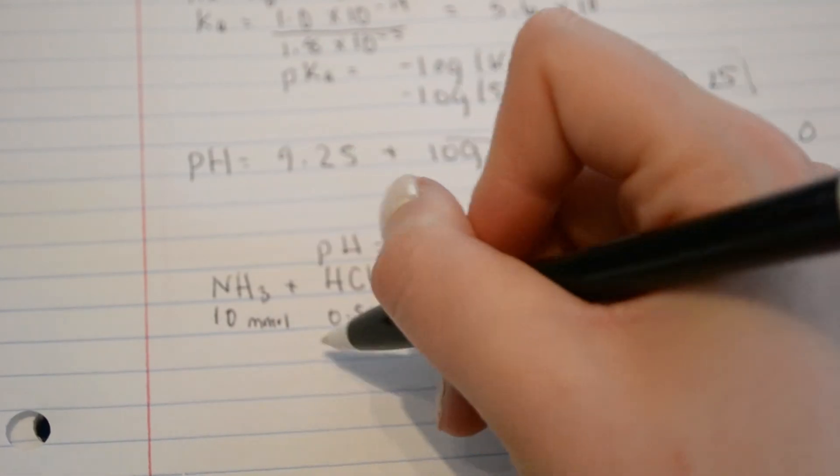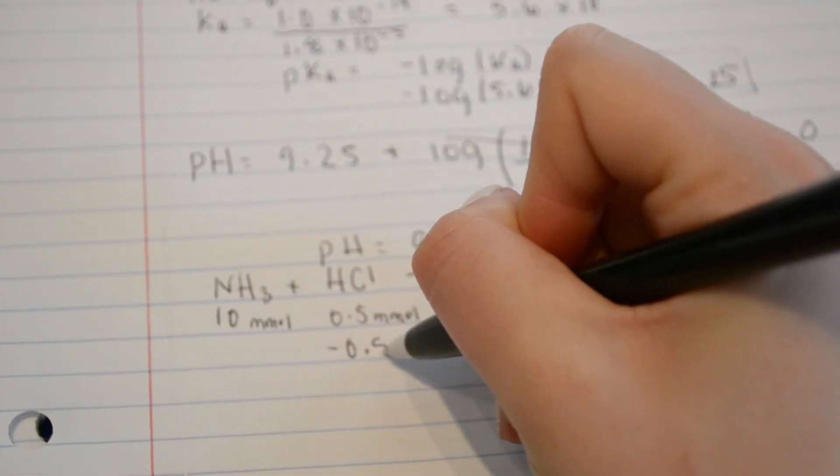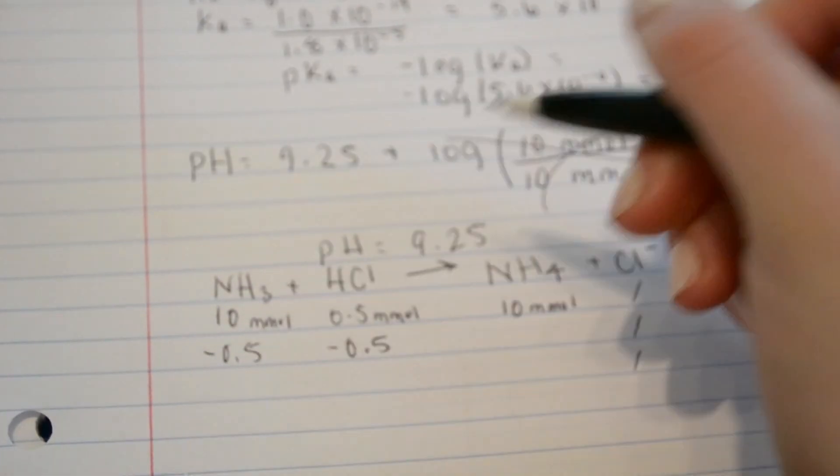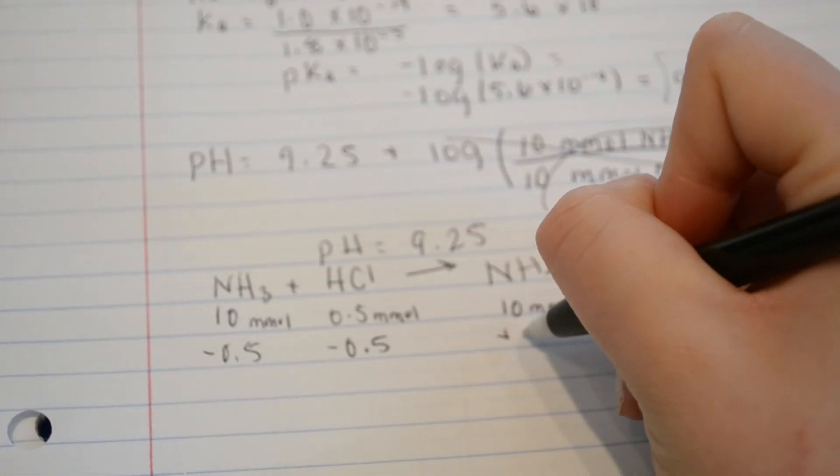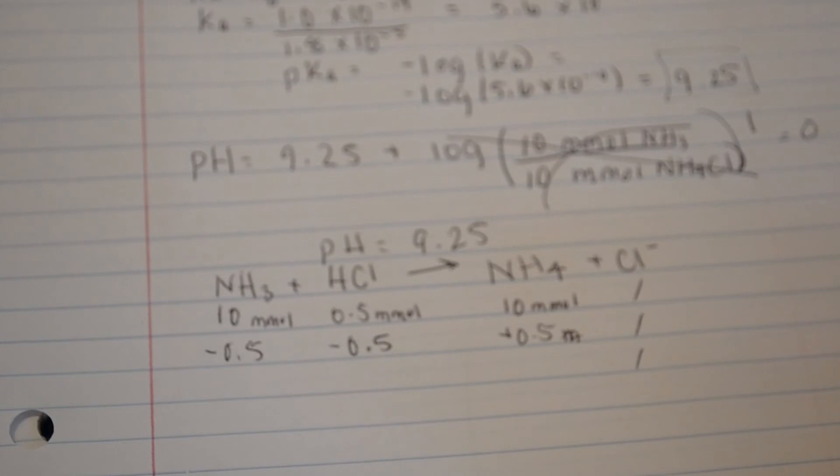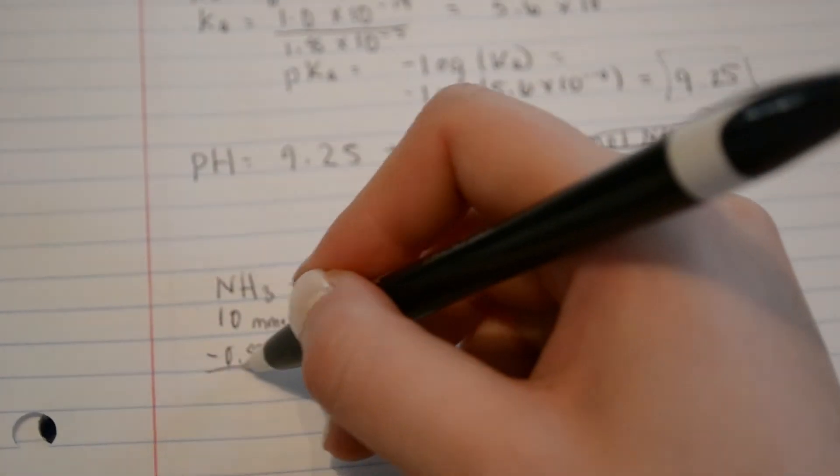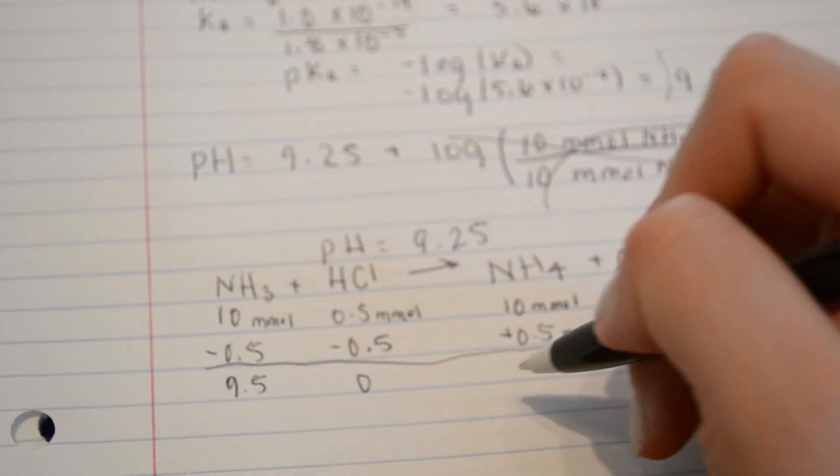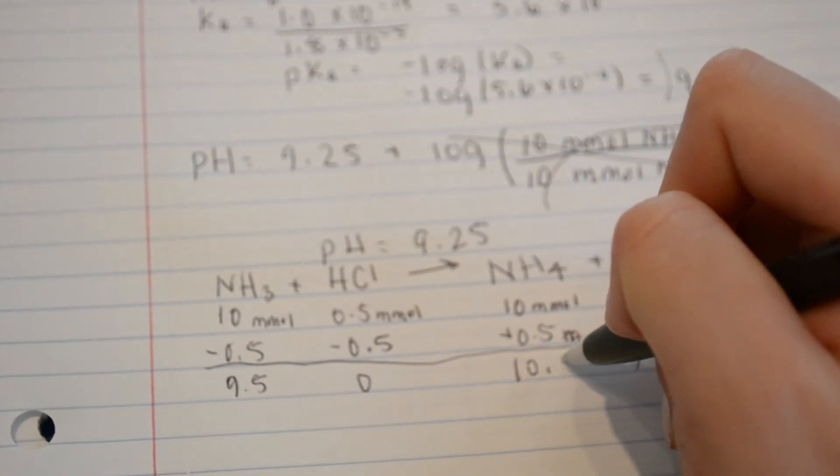All of the acid will be used up. It is the limiting reactant. So we take all of that and we subtract it from over here as well. And it's going to end up on this side of the reaction. So we're left with 9.50 and 10.5.